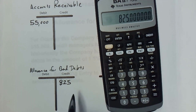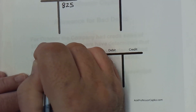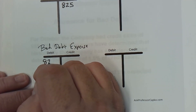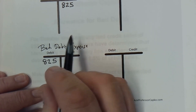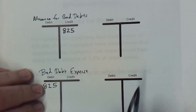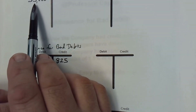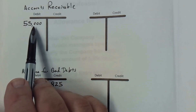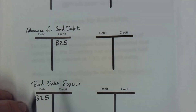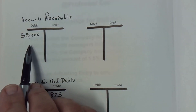We can't just credit something $825 without an offsetting debit. We use an expense account called Bad Debt Expense, which is an income statement item, and we debit it for $825. So we have a debit to Bad Debt Expense for $825 and a credit to Allowance for Bad Debts. This way we're expensing bad debts at the same time accounts receivable is being debited and sales are being credited.